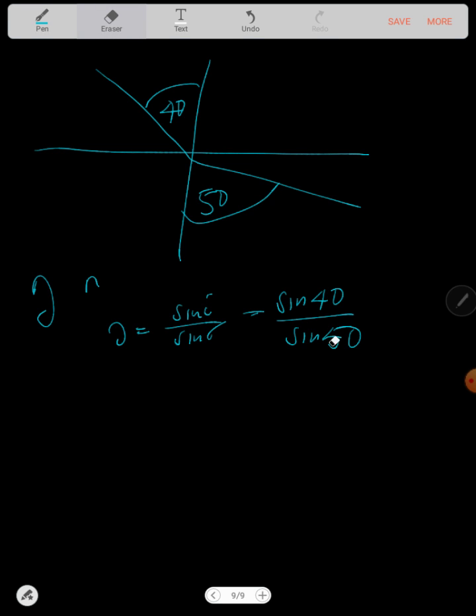So this will be sine 40 divided by sine 50. So I'm just going to divide this by sine 50. So if you have a calculator, when you punch sine 40 divided by sine 50, you should get something like 0.839 and so on.